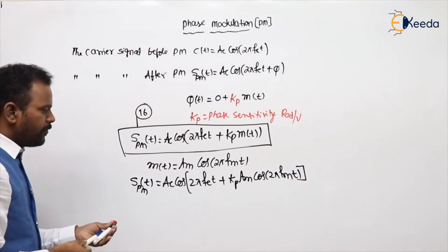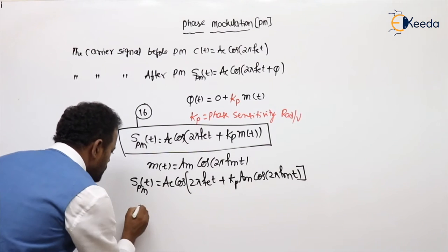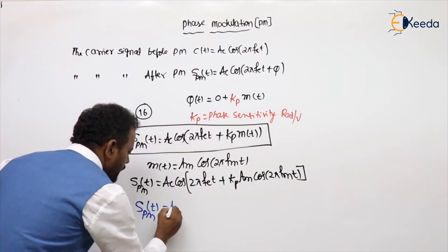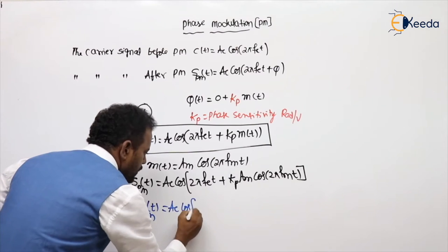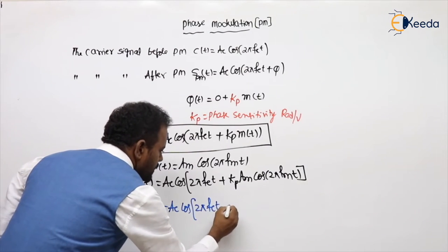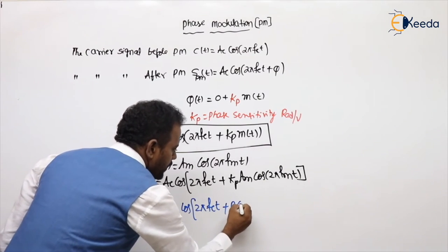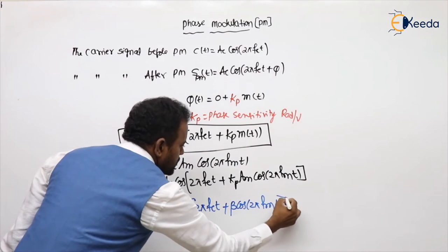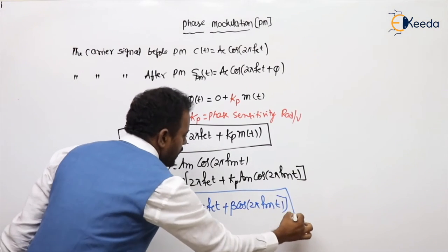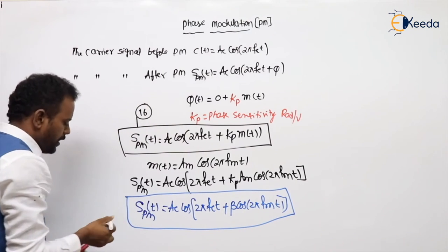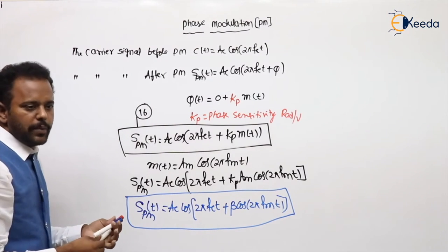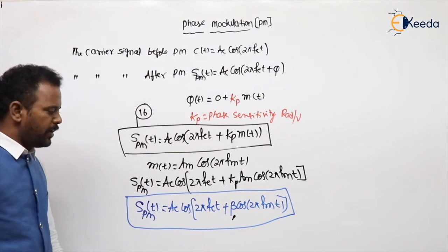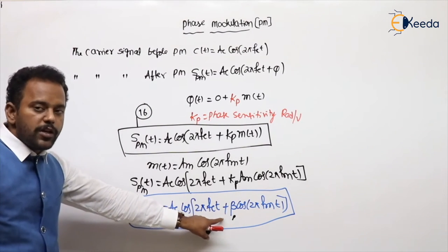Finally, the PM expression is: s_PM(t) = A_c cos(2πf_c·t + β·cos(2πf_m·t)). Here, β is the modulation index for phase modulation. To avoid confusion with FM, you can call it β_p, which is the modulation index for phase modulation. This is the 17th expression.